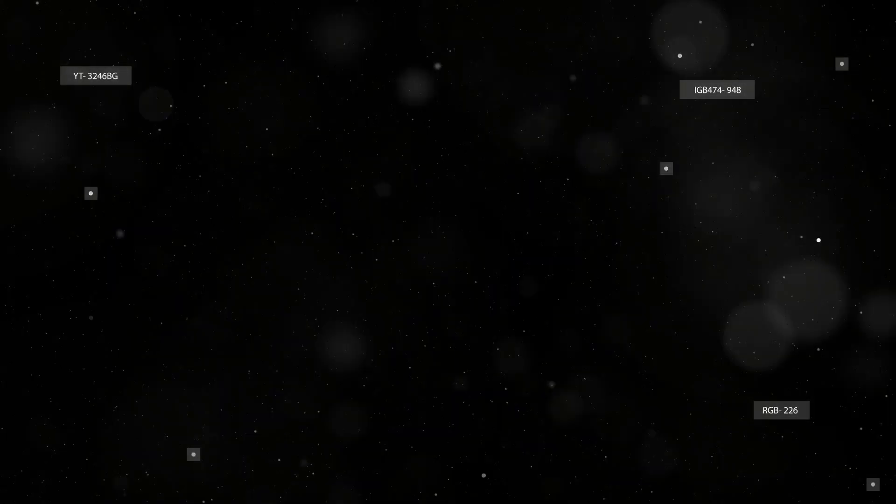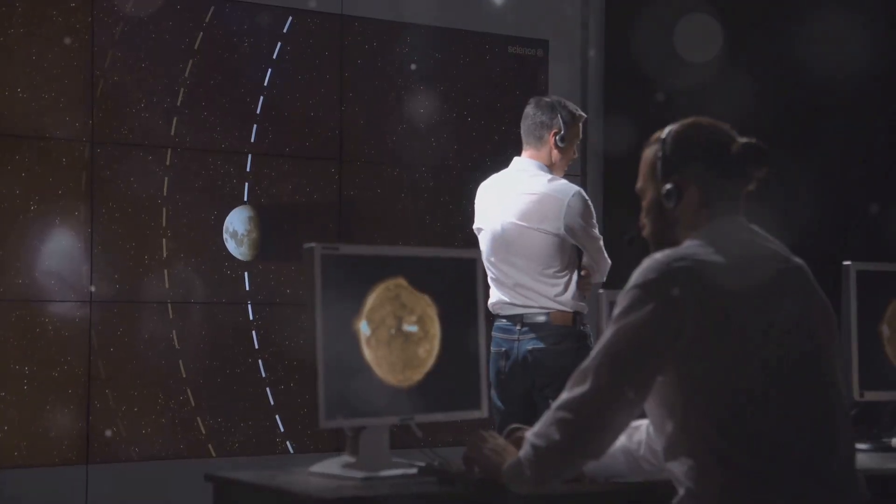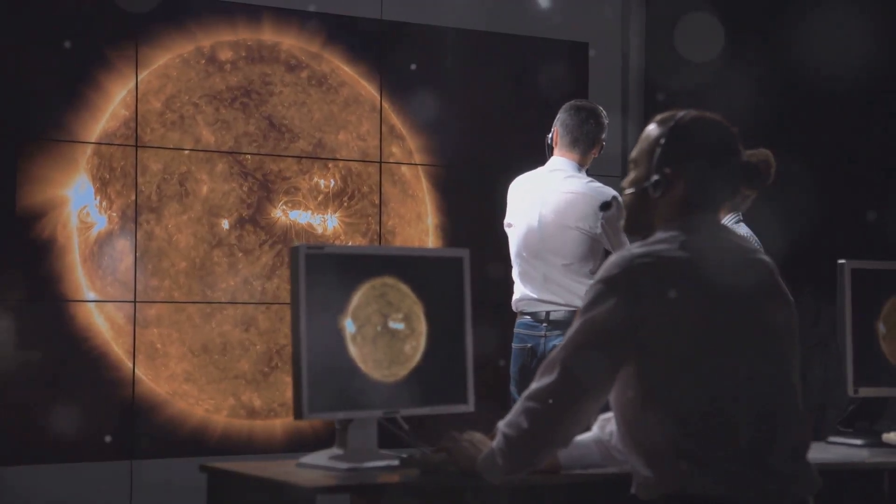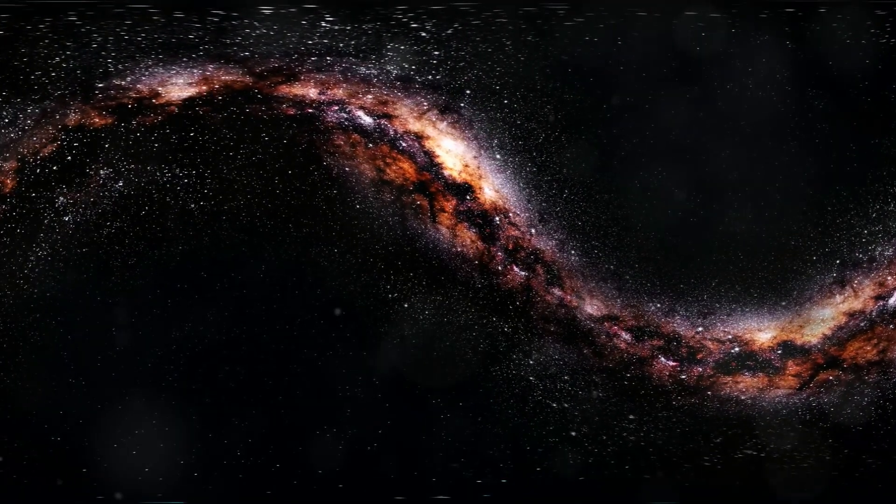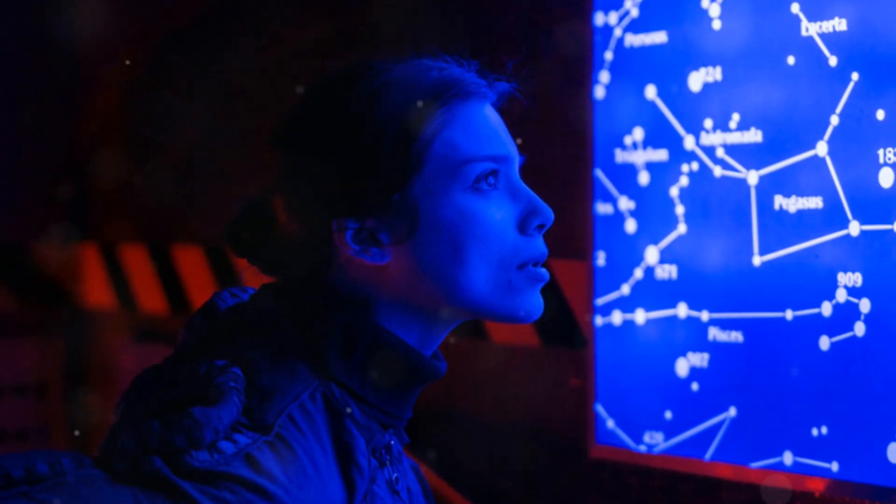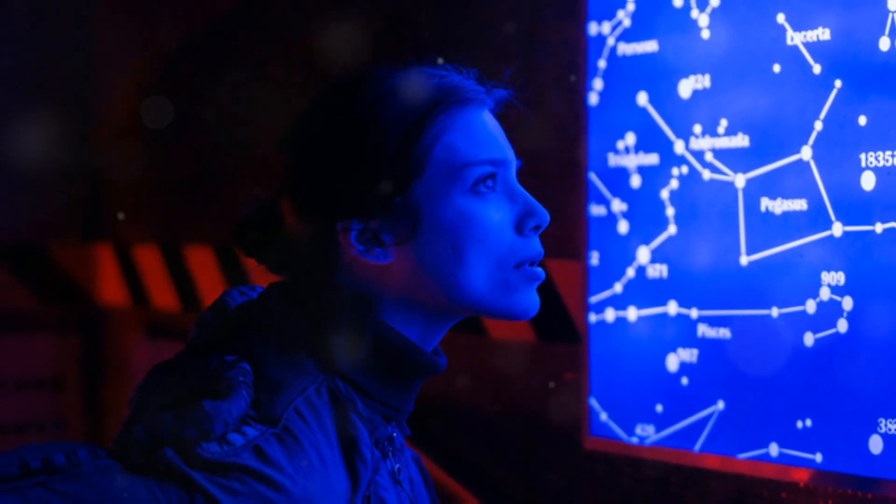Section 3: Galactic Coordinates. Scientists use a system called Galactic Coordinates to map objects in space. This system is based on the position of the Milky Way's center and its plane. It helps astronomers pinpoint the location of stars, planets, and other celestial bodies.